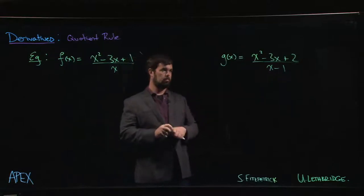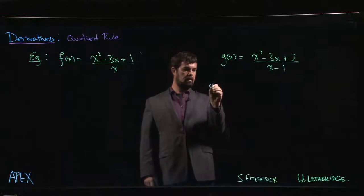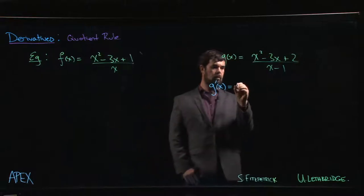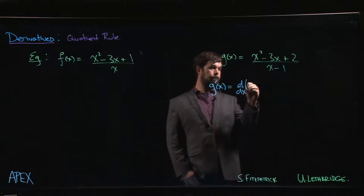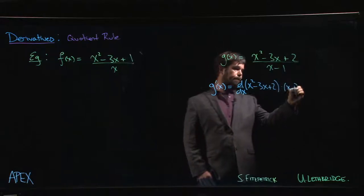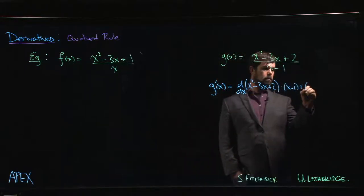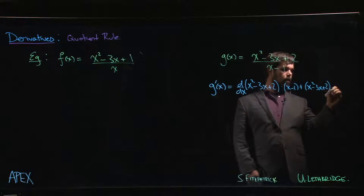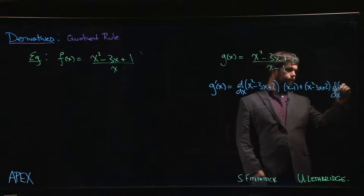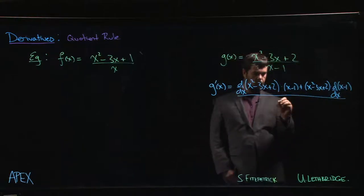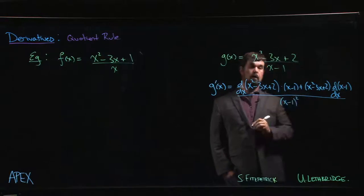Let me look at g of x first. I can certainly go ahead and apply the quotient rule. Derivative of the top times the bottom plus the top times the derivative of the bottom, all over the bottom squared.